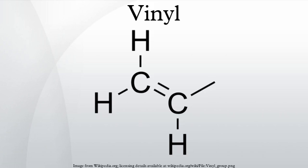In chemistry, vinyl or ethenyl is the functional group CH2=CH2, namely the ethylene molecule minus one hydrogen atom. The name is also used for any compound containing that group, namely R-CH=CH2 where R is any other group of atoms. An industrially important example is vinyl chloride, precursor to PVC, a plastic commonly known as vinyl.